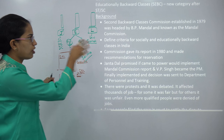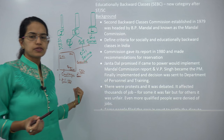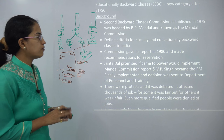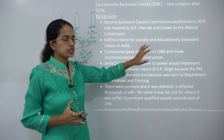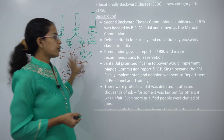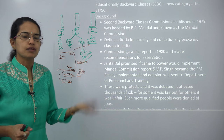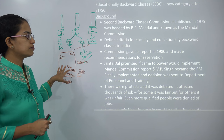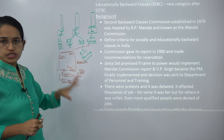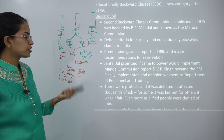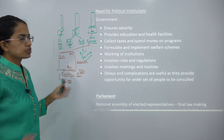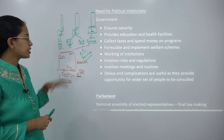The Mandal Commission, headed by BP Mandal, aimed to delineate the socially and educationally backward sections of society. The report came in 1980 with recommendations for reservation. Janata Dal promised to implement it if elected, and when VP Singh became Prime Minister of India, it was implemented. This led to widespread protests across the country, with some feeling it was unfair and others supporting it.